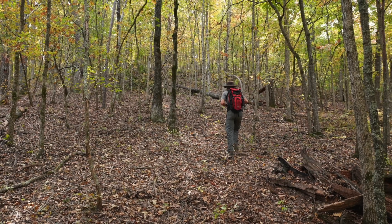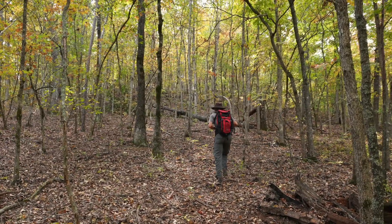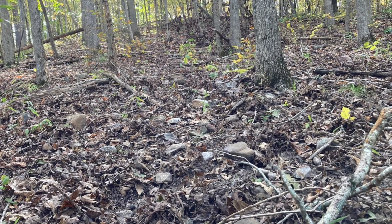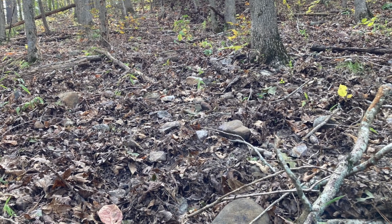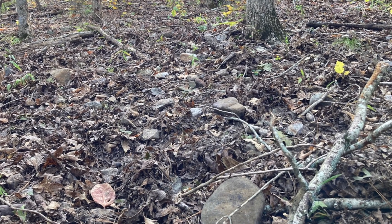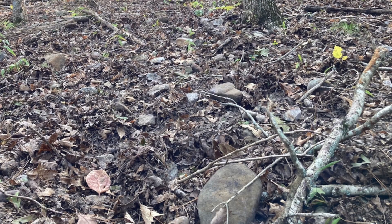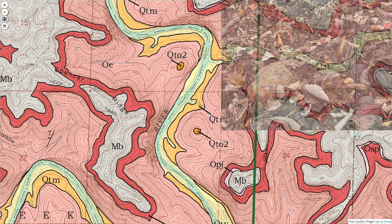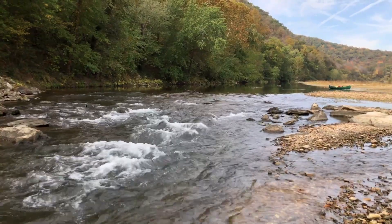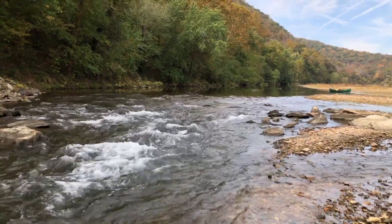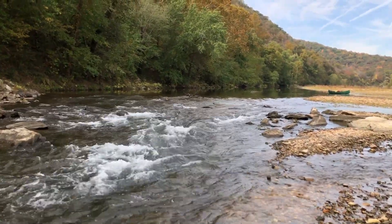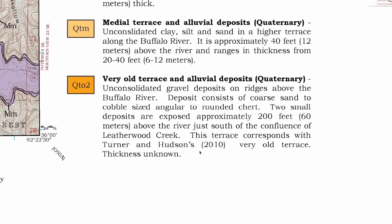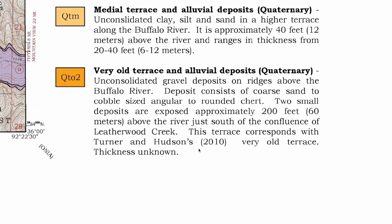So when we hiked up to the top of one of these knobs and sure enough found ourselves standing on coarse river gravel over 200 feet above the modern river, it was just so cool to realize that we were actually standing on an ancient river terrace long since abandoned by the river below. That experience really added worthwhile context to our long float through the modern Buffalo River Valley. Just how old those terraces are is a fascinating question for another day.